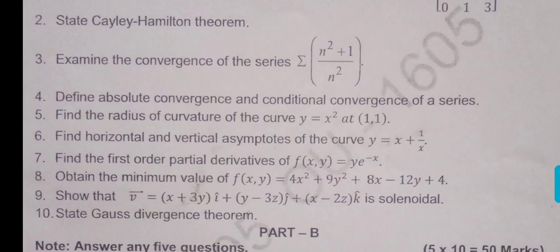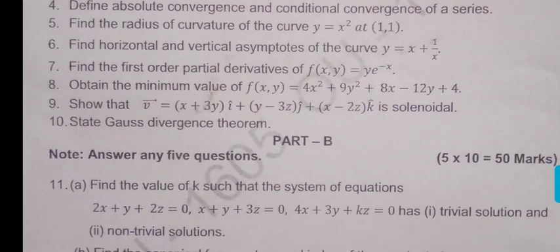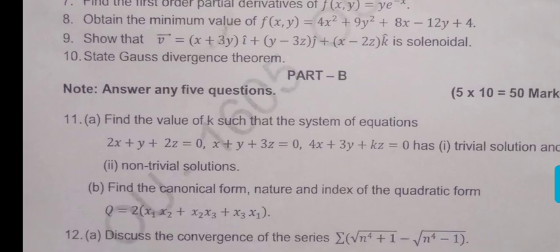Then he is asking maxima and minima. Then from the vector calculus he is asking solenoidal. Solenoidal, what we have to prove? Del dot v bar equal to 0 we have to prove. When you equate to 0, you will get the values 0. Then next he is asking state Gauss Divergence Theorem. You have to write the statement.